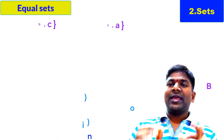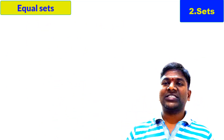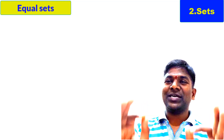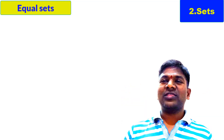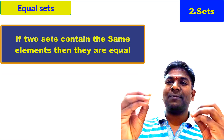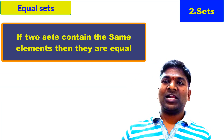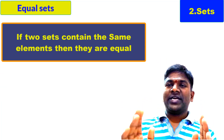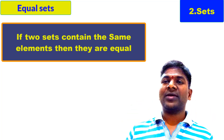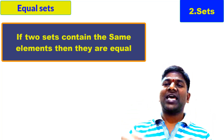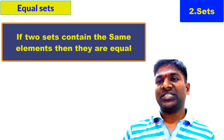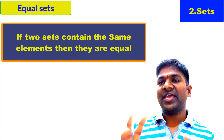Now, in simple words, let us try to understand equal sets. Two sets are said to be equal if they have the same elements and the same number of elements. Two sets are equal if the two sets have the same number of elements and the two sets have the same elements. It is in very clear words and you can understand it very easily.